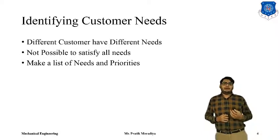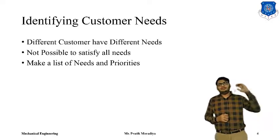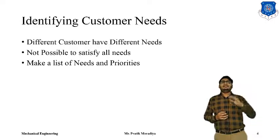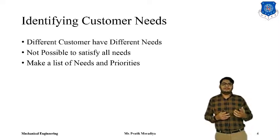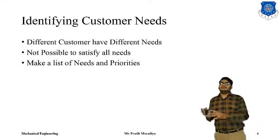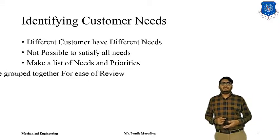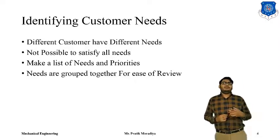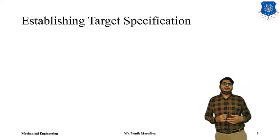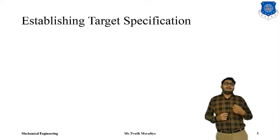We need to identify which needs we are trying to satisfy — that is called prioritizing needs. We prioritize: these are the needs we need to satisfy, these should be in our product; these are the needs that can be introduced as secondary functions or extra features; and there will be some needs that we will ignore, because they will not be in the scope of our product, or they will be very high cost, or they are very specific niche needs which we do not want to address. All these needs are then grouped together and reviewed.